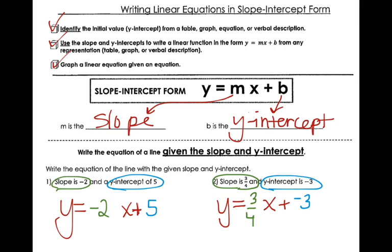Okay, so for number 1, our slope is negative 2, so I replace the m. Our y-intercept is 5, so I replace the b. There's nothing to adjust, no subtraction to become addition, nothing crazy to worry about. So my answer is y equals negative 2x plus 5.